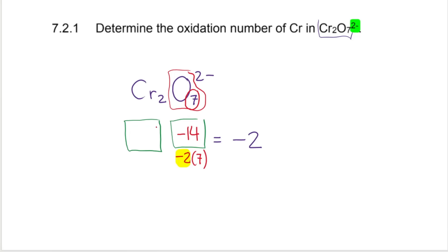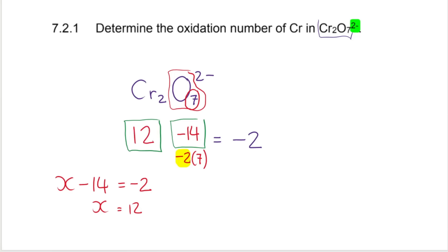You can treat this like algebra: we've got something minus 14 equals negative 2. Call this x — so x minus 14 equals negative 2. Therefore negative 2 plus 14 gives us x equals 12. That means inside the chromium box there must be an overall value of 12. But I have two chromiums — so if two chromiums together give me 12, then one Cr gives 12 divided by 2, so the oxidation number is positive 6.